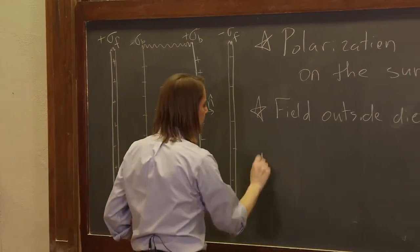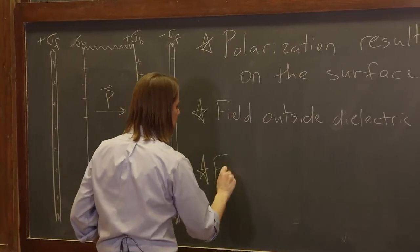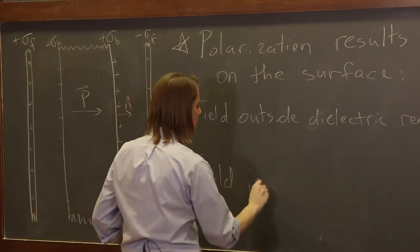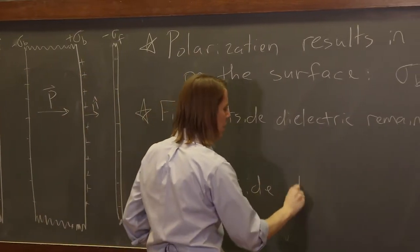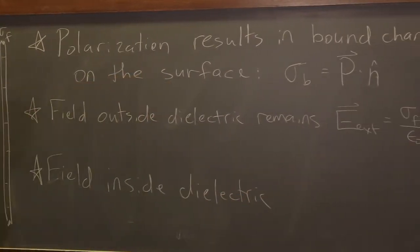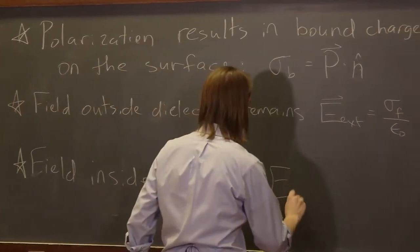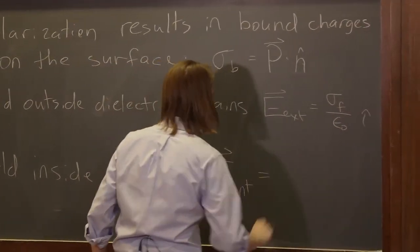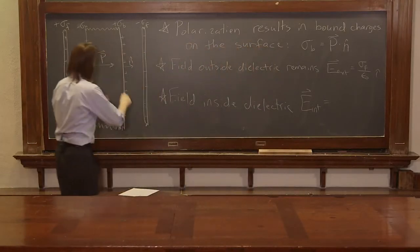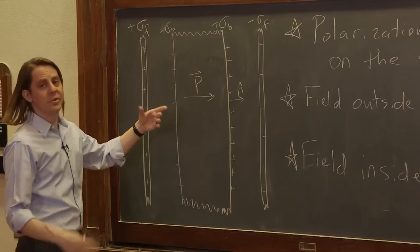That's the field outside. Let's look at the field inside the dielectric. And the field inside the dielectric, E internal equals what? So now, inside the internal field, we basically just have to sum all the fields. Electric fields obey superposition.